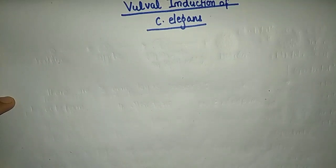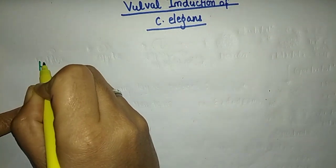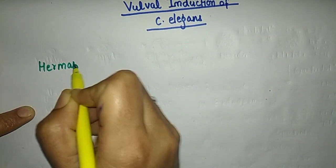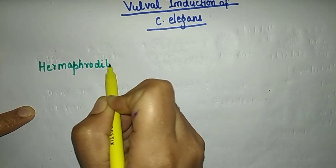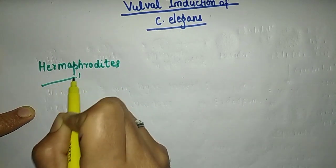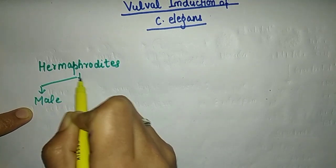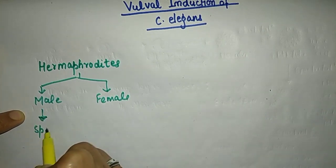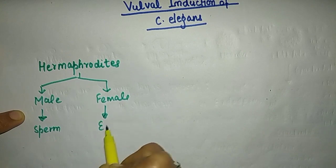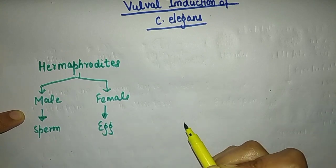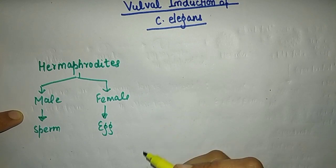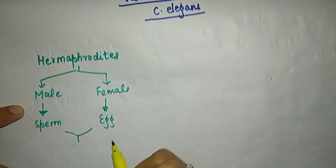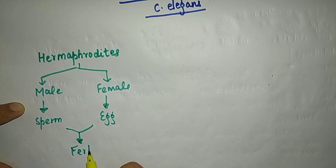Today we are going to learn about vulva induction of C. elegans. As we know, C. elegans is a hermaphrodite, which means that it has both male and female sex organs. The male produces sperm and the female produces eggs. The egg gets fertilized as it passes through the sperm region, and then passes out through the vulva.